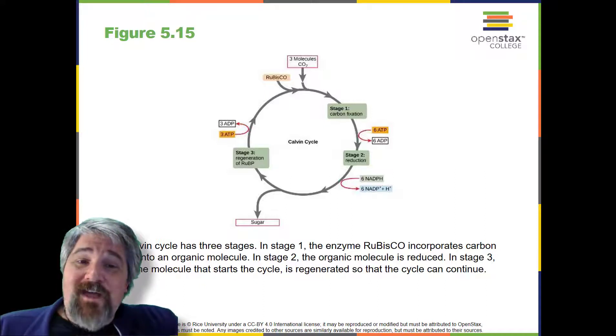In summary, it takes six turns of the Calvin cycle to fix six carbon atoms from CO2. These six turns require energy input from 12 ATP molecules and 12 NADPH molecules in the reduction step and six ATP molecules in the regeneration step.